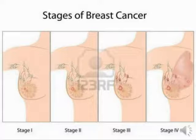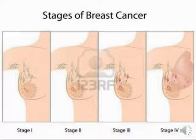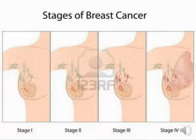Stage two also comes under benign breast cancer, and in this condition breast tissue does not look like normal tissue. Stage three comes under malignant breast cancer; in this condition the breast tissue may not be showing distinctly cancerous characteristics, but the cancer is malignant and still spreading to surrounding areas. Stage four is the most dangerous, with a greater chance of spreading to surrounding areas, and also comes under malignant cancer.